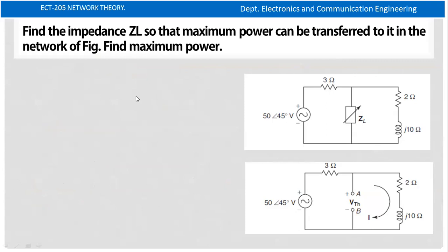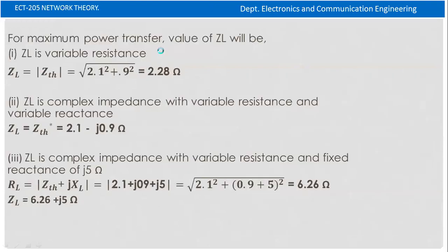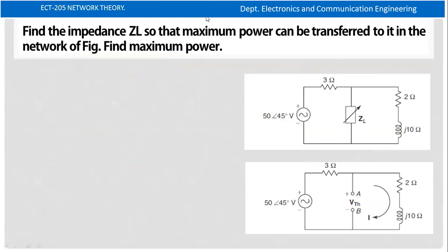Now we have a problem: find the impedance ZL so that maximum power transfer occurs in the network and find the maximum power. ZL value gives maximum power transfer.